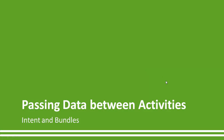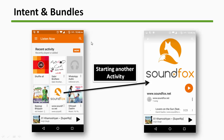Hello guys, today we are going to learn how to pass data between activities using intents and bundles. This is a music player application — as soon as you click on one music file it opens in a new window and shows different details about the music file. When you click on an item in this activity, it opens another activity where you can see all the details about the song.